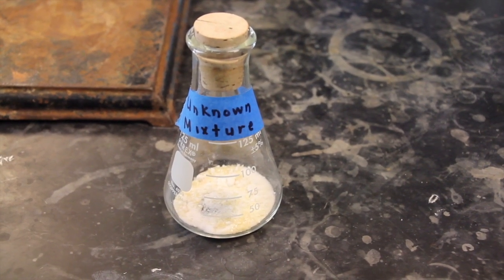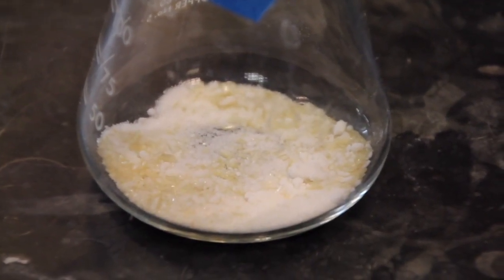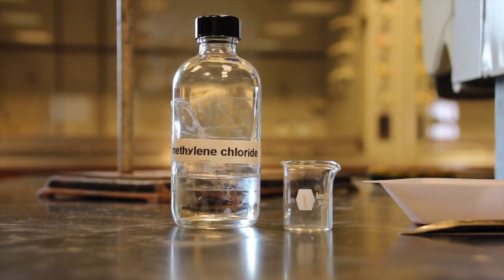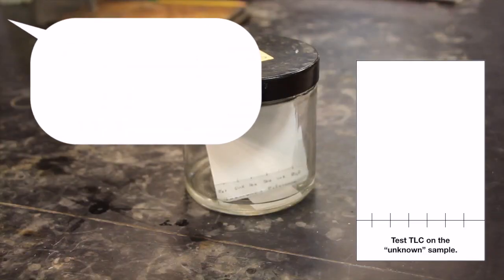Your professor or TA should have come around at this point and assigned you one of the four unknowns. Don't forget to write down your unknown number. You are going to begin by measuring out 0.1 gram of your unknown and dissolving it into less than one milliliter of methylene chloride. To facilitate your column, run a test TLC on your unknown.